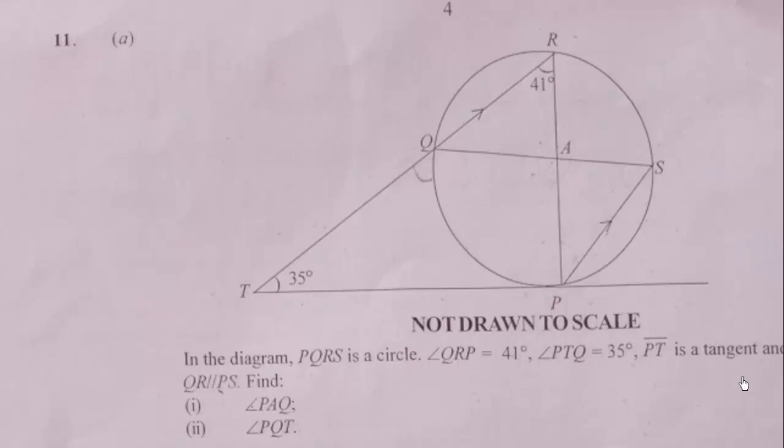Hello, in this video we'll be looking at question 11 of WAEC 2021, the November-December exams. In the diagram, PQRS is a circle. Angle QRP is 41 degrees, angle PTQ is 35 degrees. Line segment PT is a tangent and QR is parallel to PS.